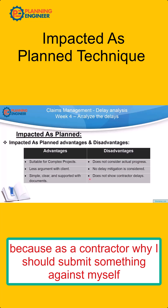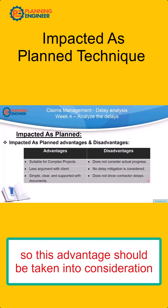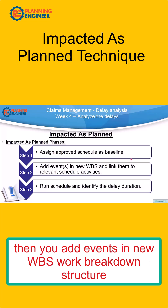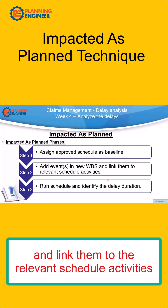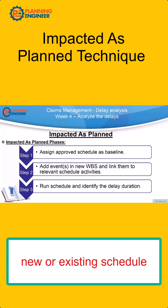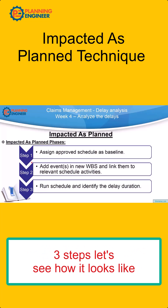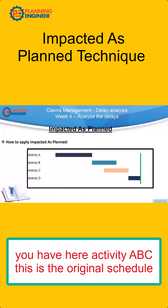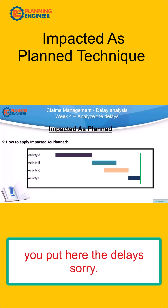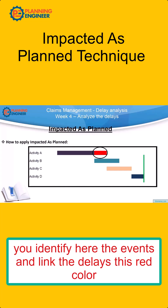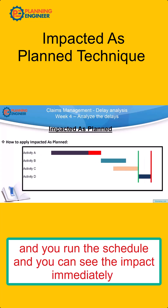Impacted as Planned is very simple. All you need to do is: assign the approved schedule as a baseline, then add the delay events as new work breakdown structure items and link them to the relevant schedule activities, then run the schedule and identify the delay duration. It is very straightforward — three steps. As shown here, you have activities A, B, and C in the original schedule. You identify the events and link the delays shown in red, run the schedule, and you can see the impact immediately.